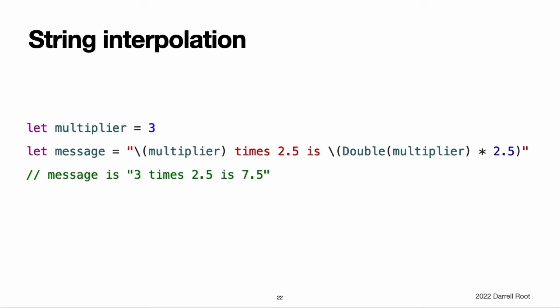String interpolation is a way to construct a new string value from a mix of constants, variables, literals, and expressions by including their values inside a string literal. You can use string interpolation in both single-line and multi-line string literals. Each item that you insert into the string literal is wrapped in a pair of parentheses, prefixed by a backslash. In the example, the value of multiplier is inserted into a string literal as \(multiplier). This placeholder is replaced with the actual value of multiplier when the string interpolation is evaluated to create an actual string.